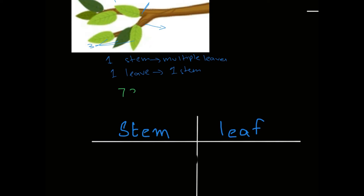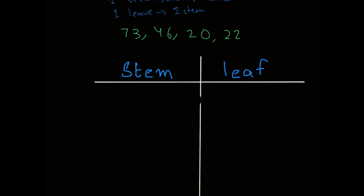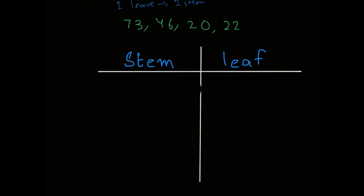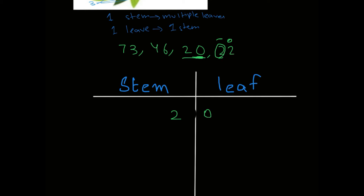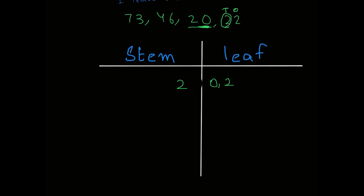Starting with the minimum value of 20 — we write 2 in the stem section (the tens digit), and 0 goes in the leaf section. Since 22 also has 2 in its tens place, it goes in the same stem row. So for stem 2, we have leaves 0 and 2. This position is ones and this is called the tens.